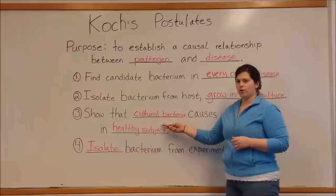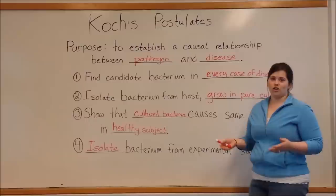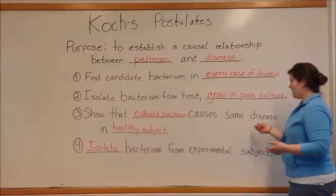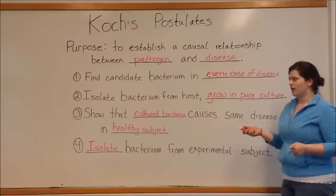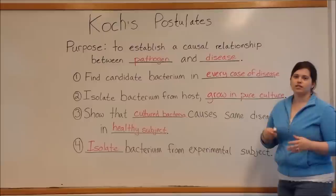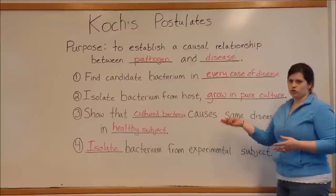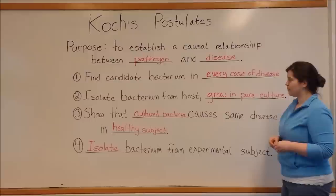Also, for criteria three and four, you're supposed to show that the bacterium or pathogen causes a disease in a healthy subject. This isn't always ethical, especially with humans — you can't take a healthy human, inject them with a serious pathogen, and see that they get a disease. This is why we usually use animal models for this step. However, there are some pathogens that infect humans but don't readily infect animals, making it difficult to carry out these steps with those pathogens.